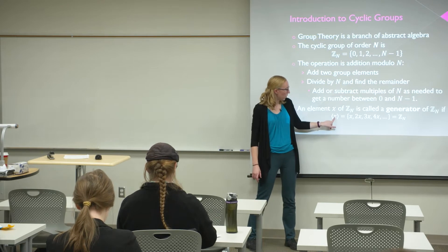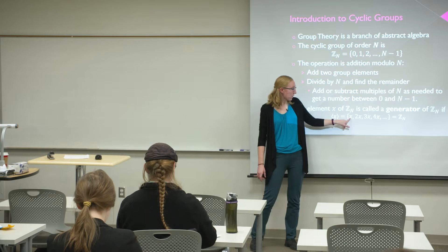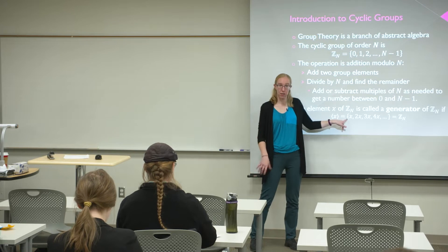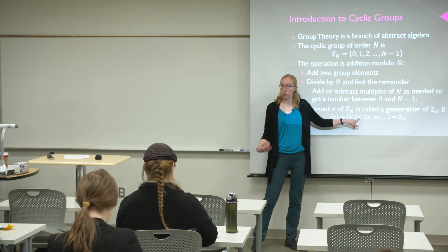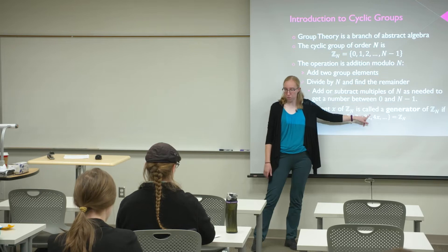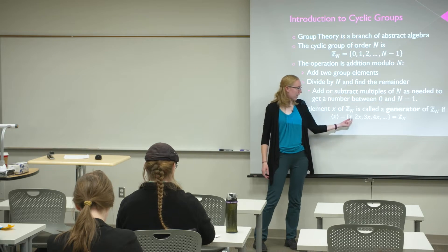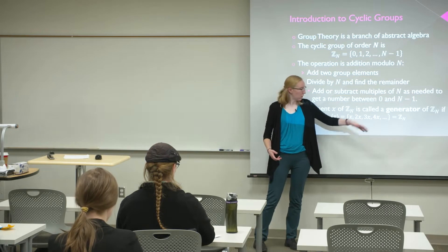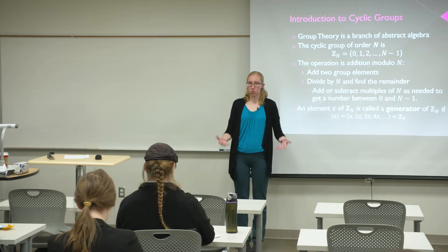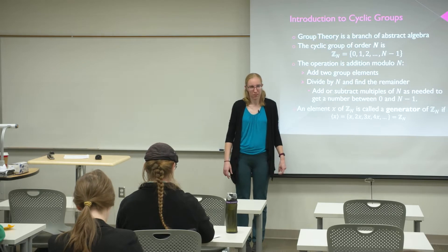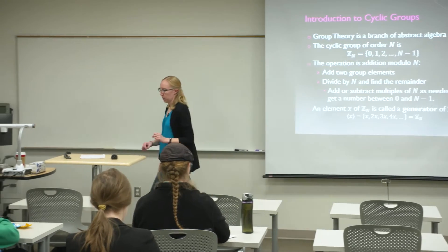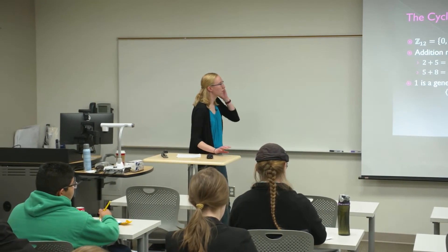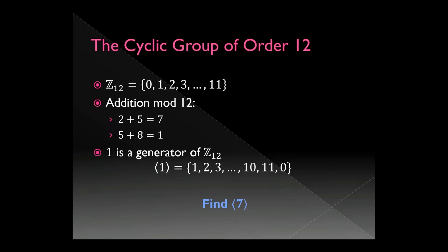So this notation means: take x, add x plus x, and x plus x plus x, and so on. If that process gives me all of the numbers in the group, then x is a generator. Let's look at an example: the cyclic group of order 12. This one is familiar because of clocks. We all know how to tell time.